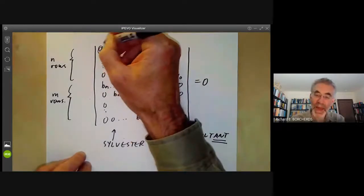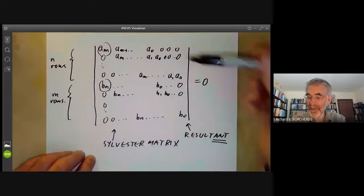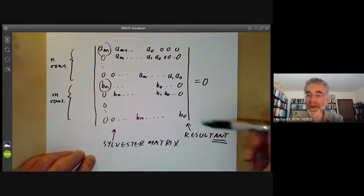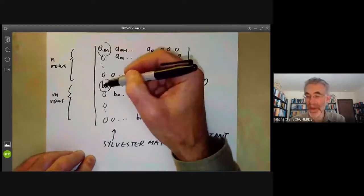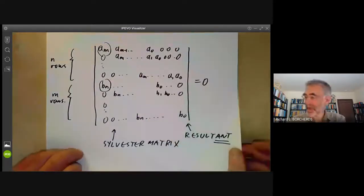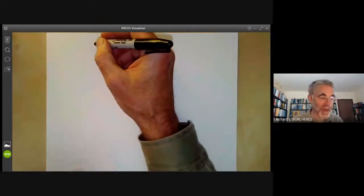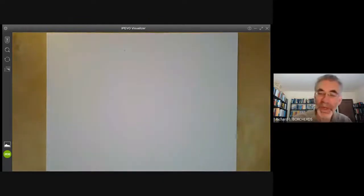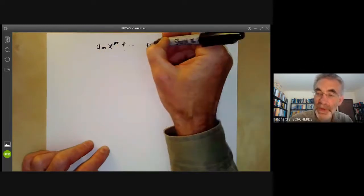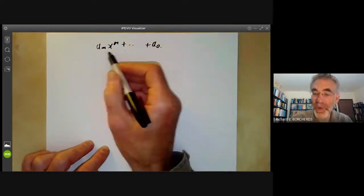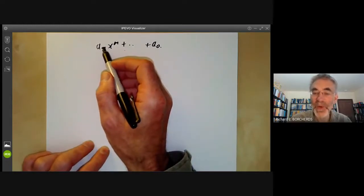Well, there's a slight problem. What do we do about am and bn being zero? You can see this massive resultant also vanishes if both am and bn are zero. So the condition that am is zero can be thought of as saying that the polynomial has a root at infinity. So if we look at am x to the m plus a0, this normally has m roots. If am is non-zero, if am is zero, then it will have less than m roots. So we pretend it's also got a root at infinity.